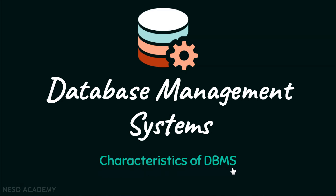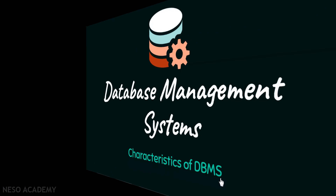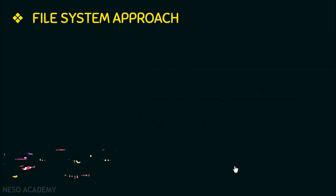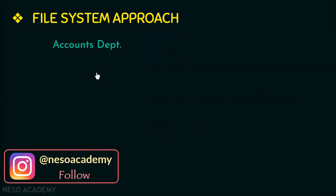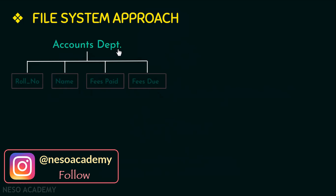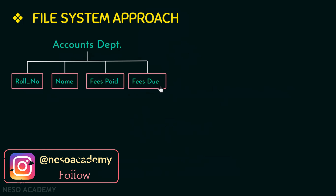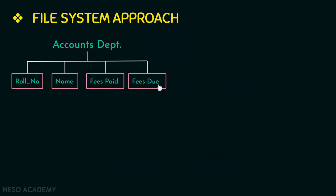As I mentioned in the previous video, before DBMS we were using the file system approach. In traditional file systems, data was stored in files. For example, if I have one user — say the accounts department — who keeps track of student fees and their dues, this user just needs the student roll number, student name, the fees paid by the students, as well as any dues.